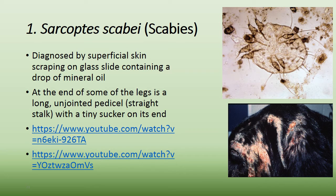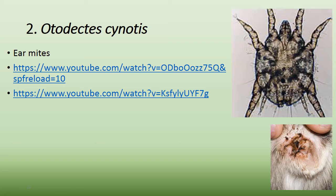Sarcoptic scabies, often just called scabies, is diagnosed by superficial skin scraping on a glass slide containing a drop of mineral oil. You scrape the superficial skin, place it on a slide, and view it under the microscope. At the end of some of the legs is a long unjointed pedicle — a straight stalk with a tiny sucker on it.